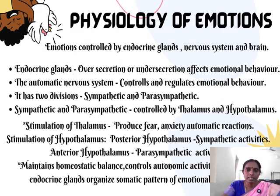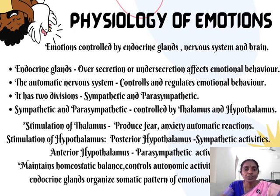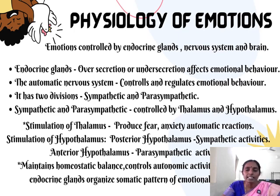There are physiological and psychological factors involved in these emotions. The contributing biological or physiological factors are important to understand. These emotions are controlled by the endocrine glands, the nervous system, and the brain, because the thalamus produces fear, anxiety, and automatic reactions. Similarly, endocrine glands organize somatic patterns of behavior.